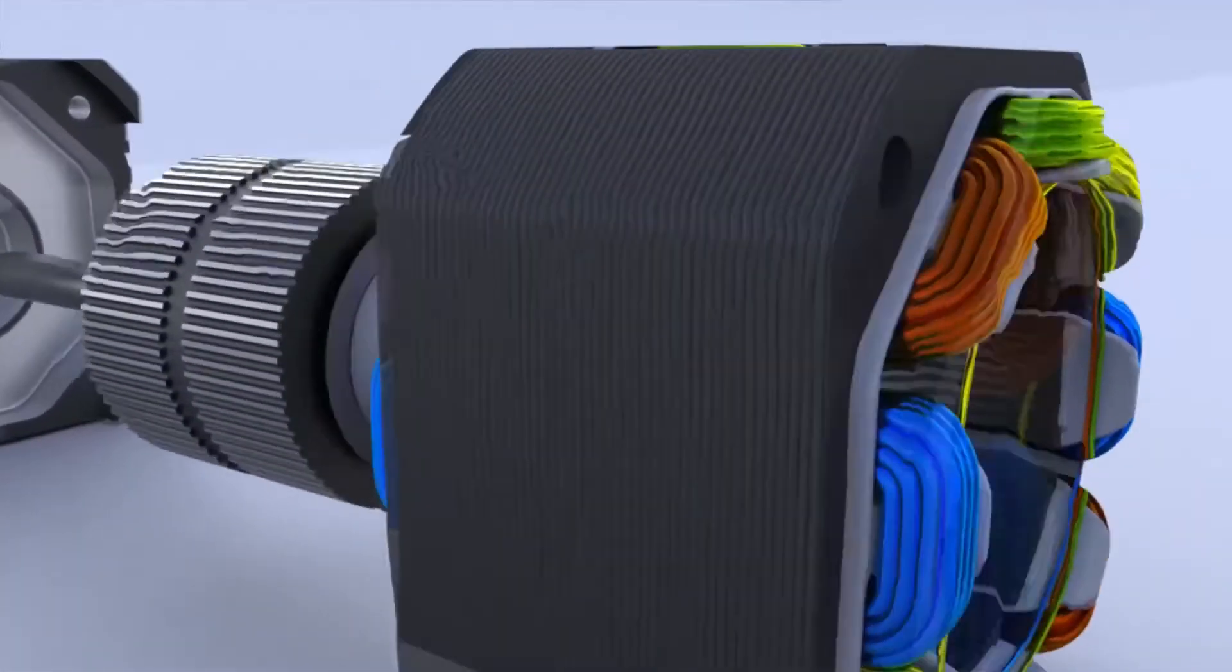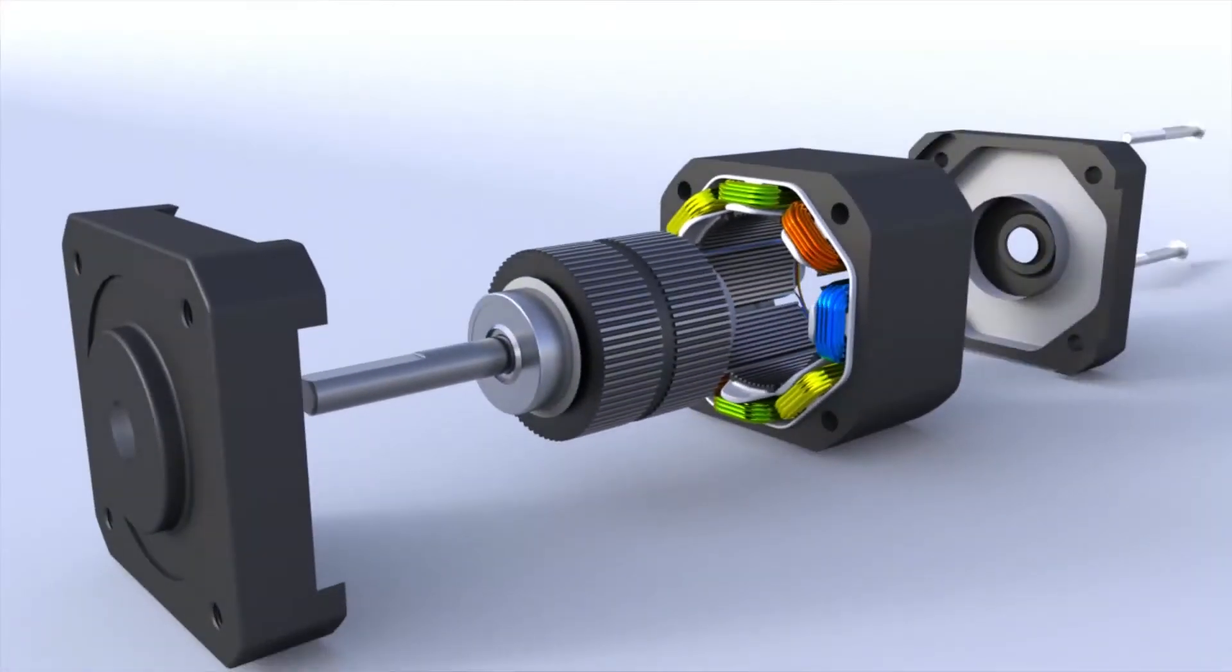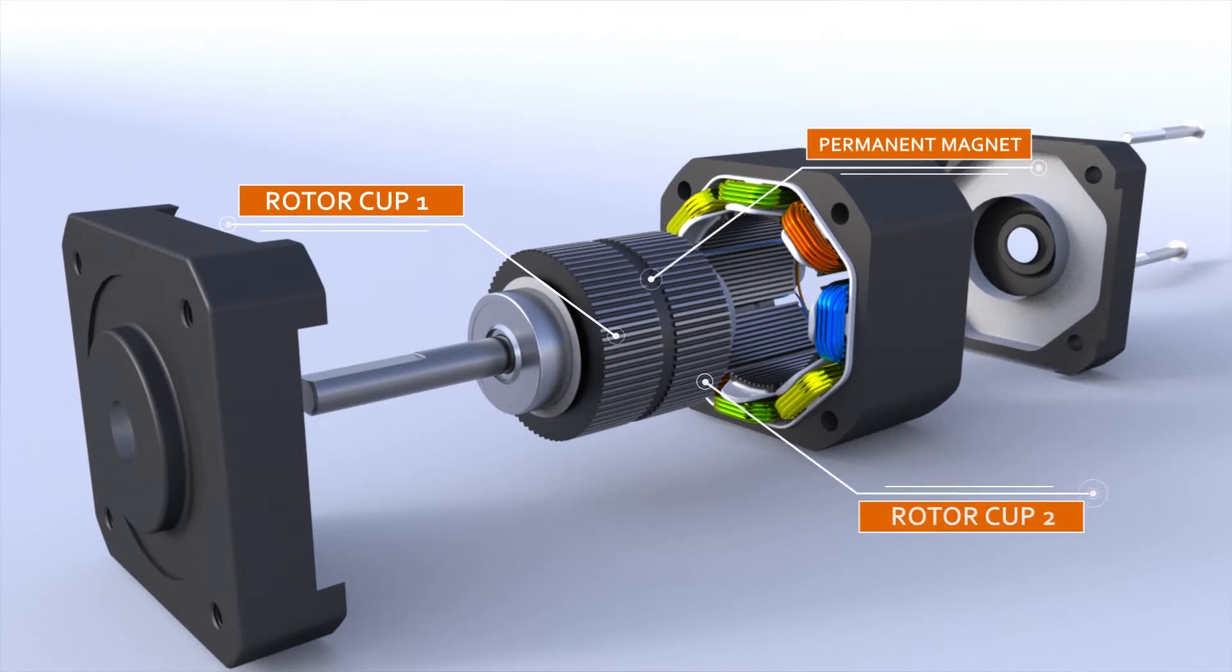Rotor is made up of three components: rotor cup 1, rotor cup 2, and permanent magnet. The rotor is magnetized in the axial direction so that, for example, if rotor cup 1 is polarized north, rotor cup 2 will be polarized south.